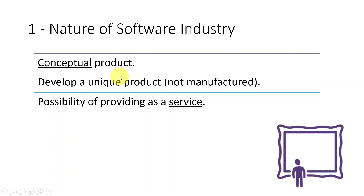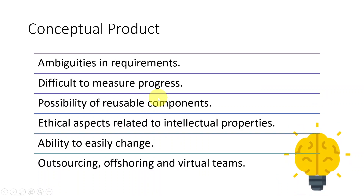The key features we'll cover are: the conceptual nature, the development of a unique product, and the possibility of providing software as a service. Unlike many other industries, in software development we are producing a conceptual product — a product which is not physical or tangible. Compare this to car manufacturing or other machinery, which involves physical, tangible products. We don't manufacture software; we produce software once and then let many users use it. There are pros and cons due to this conceptual nature.